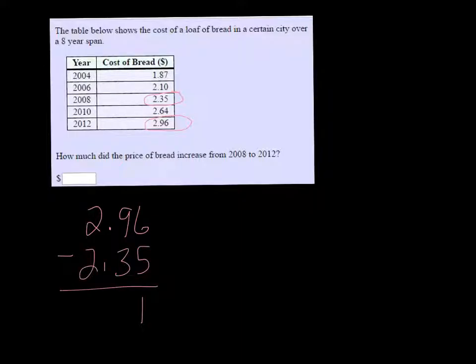So 6 minus 5 is 1, 9 minus 3 is 6 — it went up by 61 cents, so $0.61.